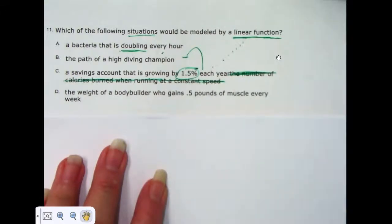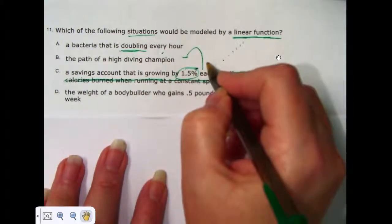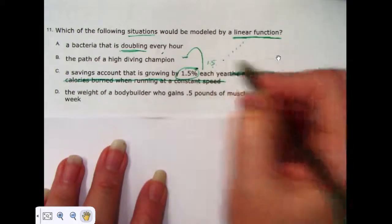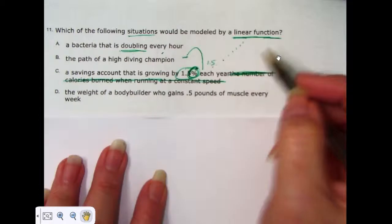Letter C says a savings account that is growing by 1.5%. That's not adding one particular number that's never going to change. As the saving account grows, it's going to grow higher and higher, but it's going to add more and more. The first year, it might only add 1.5% and then it's going to add more. Not a percentage. A percentage does not mean that it's constant.